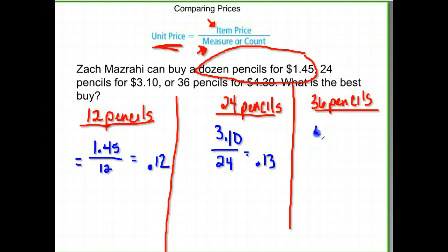Finally, our 36 pencils. They were $4.39 for the 36 pencils. So we take $4.39 divided by 36, and we get $0.12 cents again. So it looks like we have a toss-up between the 12 pencils and the 36 pencils. I'm going to go back and look more in detail at what my answer was. For this one, it's 0.121944.